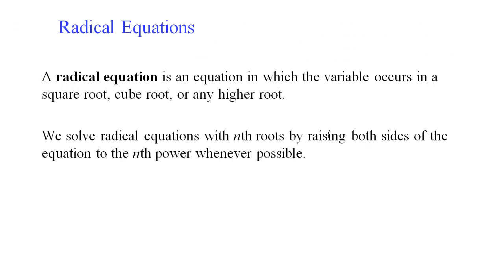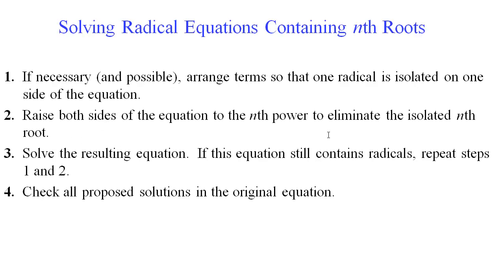Let's move on to radical equations — anything that involves a root, whether a square root, cube root, or any power. To solve them, isolate the radical on one side of the equation and then raise both sides to whatever power is necessary to undo that root. Then solve the resulting equation, and if a radical is still present, repeat the process until all radicals are gone. You can actually have two radicals, one on each side, and need to do this twice.